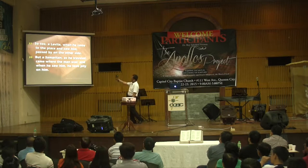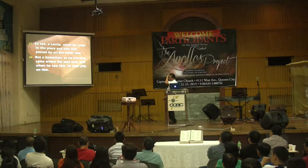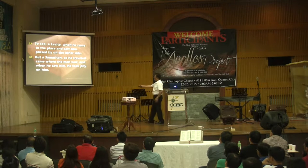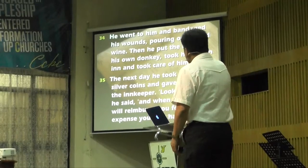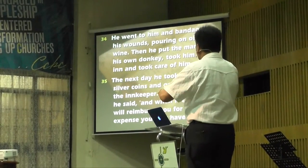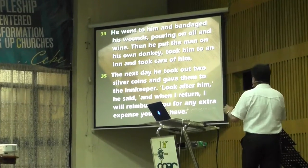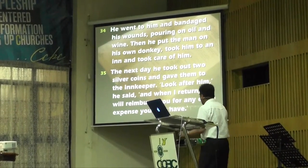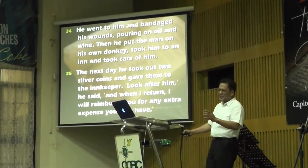The same thing with the Levite — when he came to the place, he saw him and passed by on the other side. And then here comes the hero of the story: a Samaritan, as he traveled, came where the man was, and when he saw him he took pity on him. He bandaged his wounds, pouring on oil and wine, put the man on his own donkey, took him to an inn, and took care of him. The next day he gave two silver coins to the innkeeper, saying 'Look after him, and when I return I will reimburse you for any extra expense.'